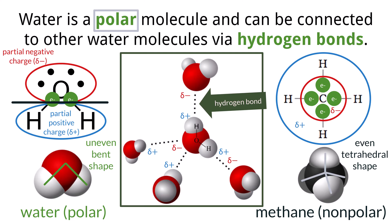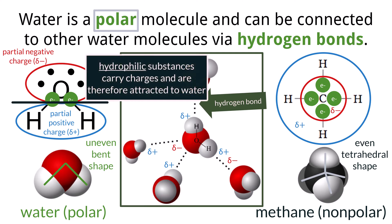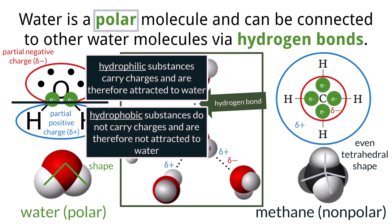If this attraction takes place between this proton and another atom that is negatively charged, we can classify it as a hydrogen bond. In addition, because water carries these charges, it can also be attracted to other charged substances that are not water. Substances that carry charges and are attracted to water are classified as hydrophilic.